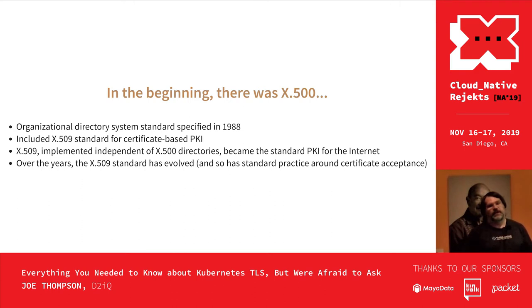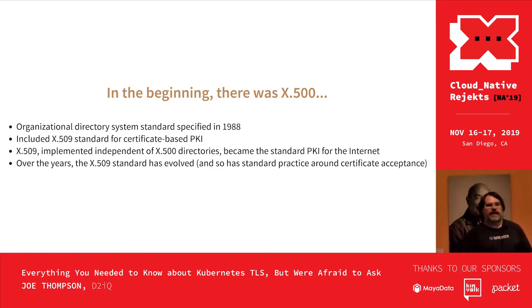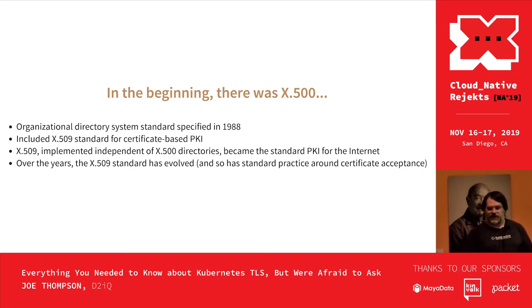In the beginning, there was X.500. You've heard of it because that's all LDAP is — it's an evolution of the X.500 directory structure. X.500 included a certificate PKI called X.509 as a sub-standard. When the internet needed secure communications for things like buying rabbit food on eBay, they said, well, we already have this standard. It's relatively easy to implement and doesn't need a directory behind it. So they took it, ran with it, and it's evolved, as has the standard practice of browser makers and client writers.